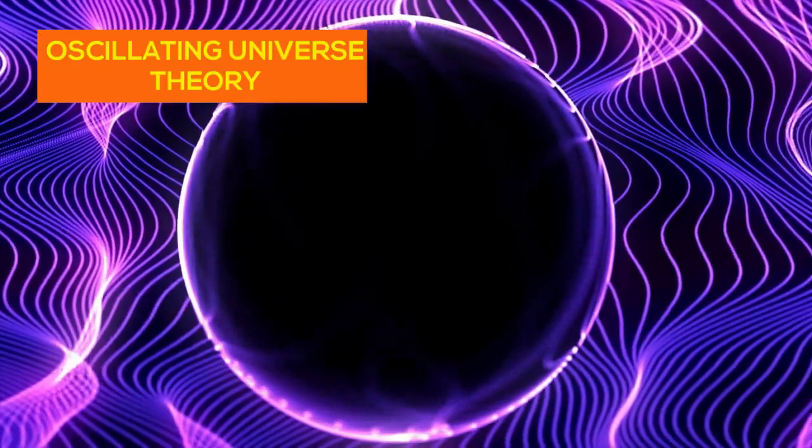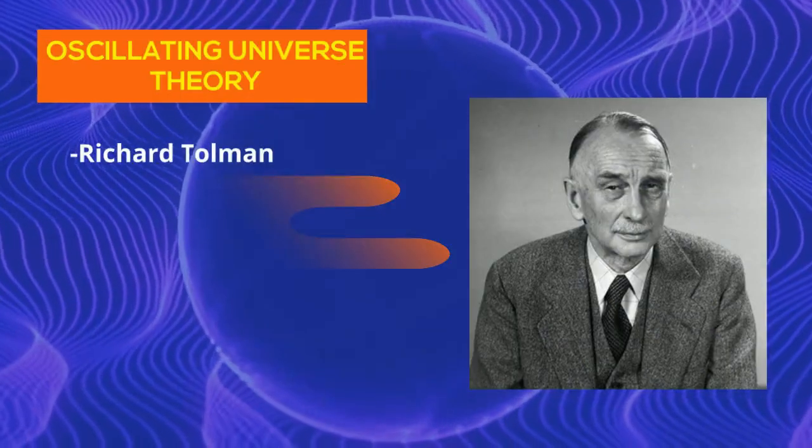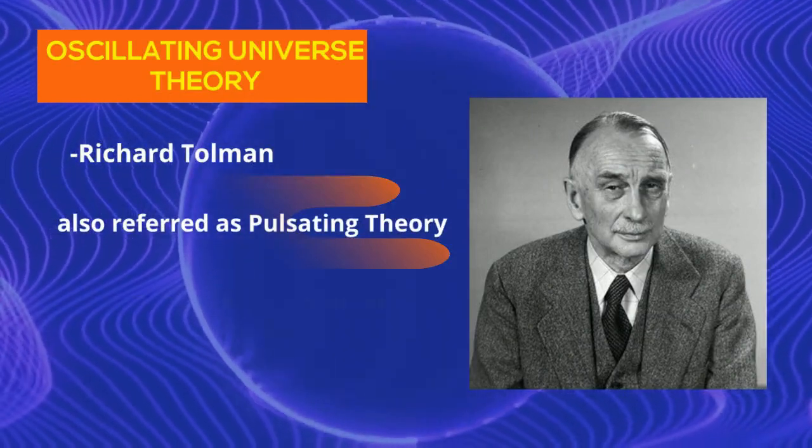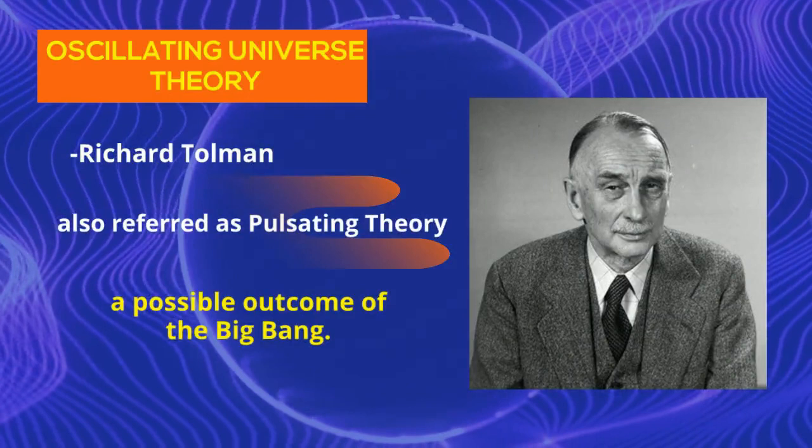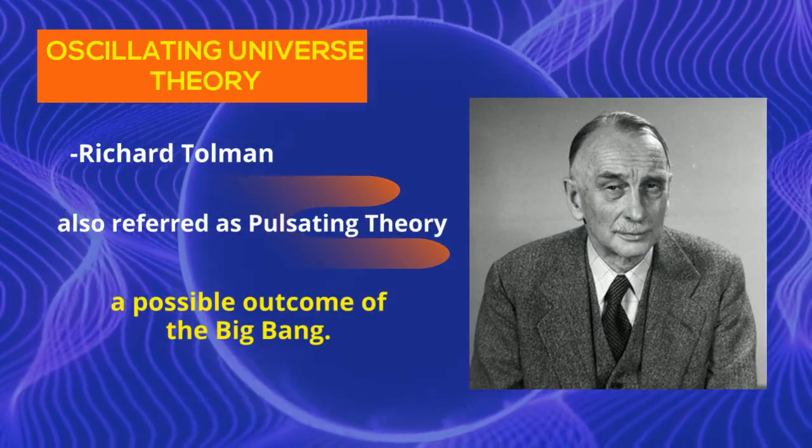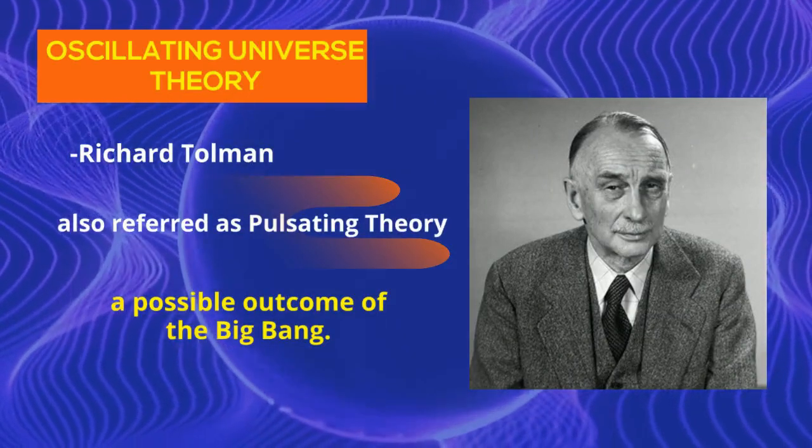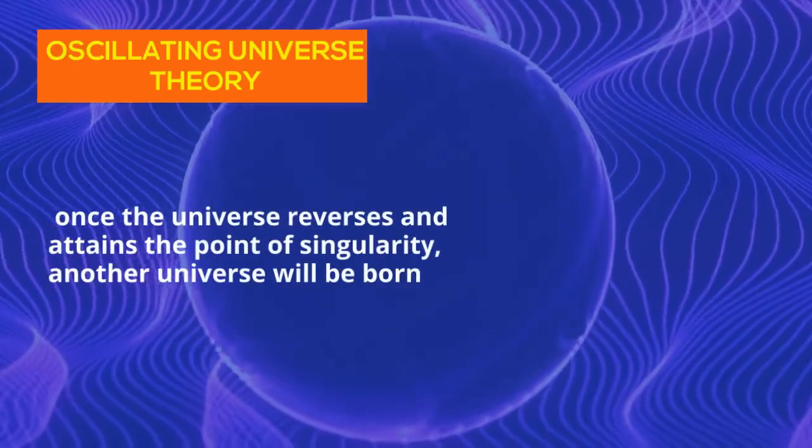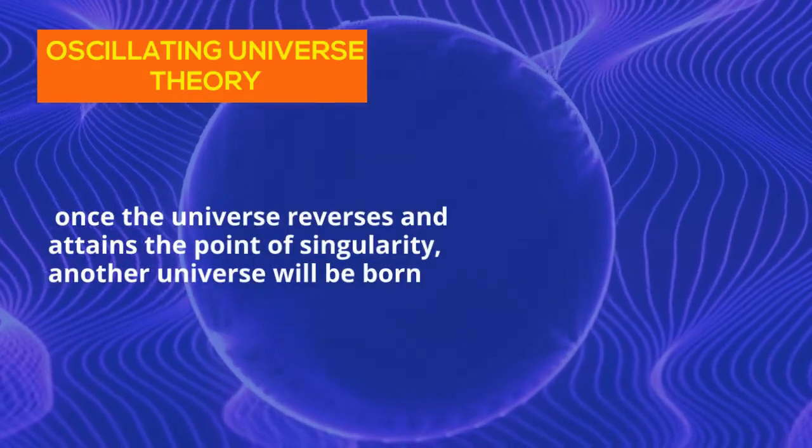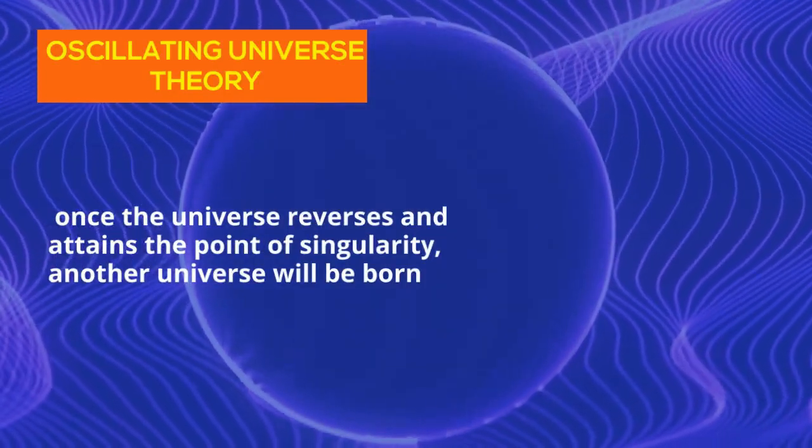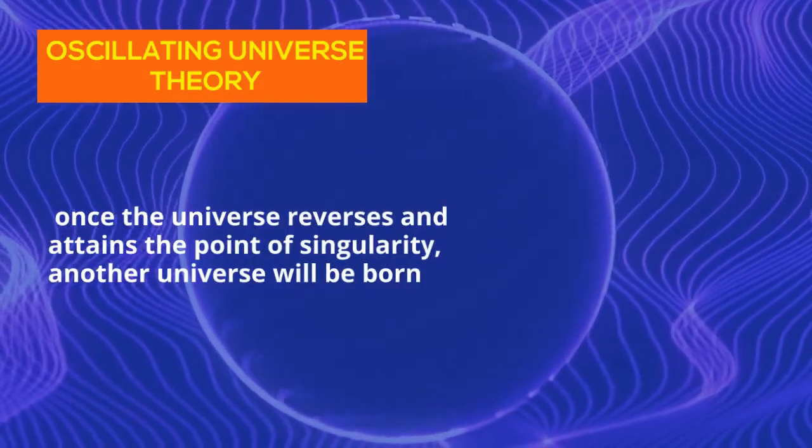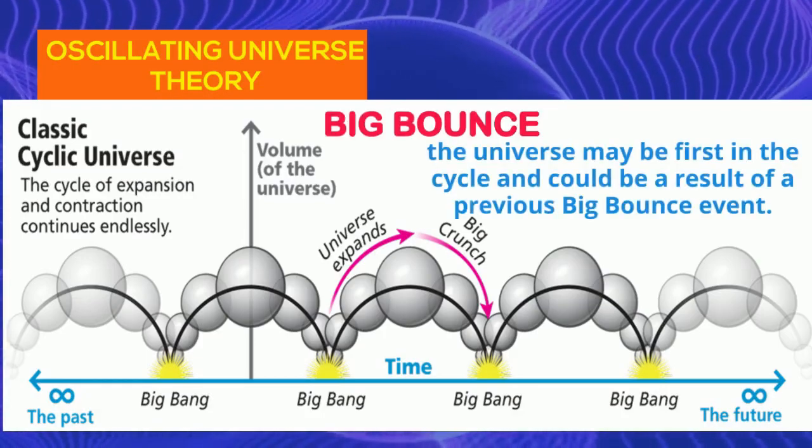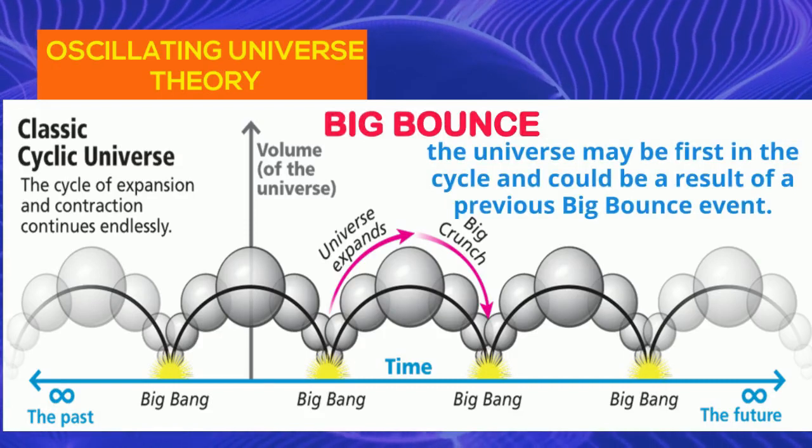The oscillating universe theory is a hypothesis credited by Richard Tolman, who saw it as a possible outcome of the Big Bang. The oscillating universe theory suggests that once the universe reverses and attains the point of singularity, another universe will be born. This is referred to as the Big Bounce. Tolman theorized that the universe may be first in the cycle and could be a result of a previous Big Bounce event.